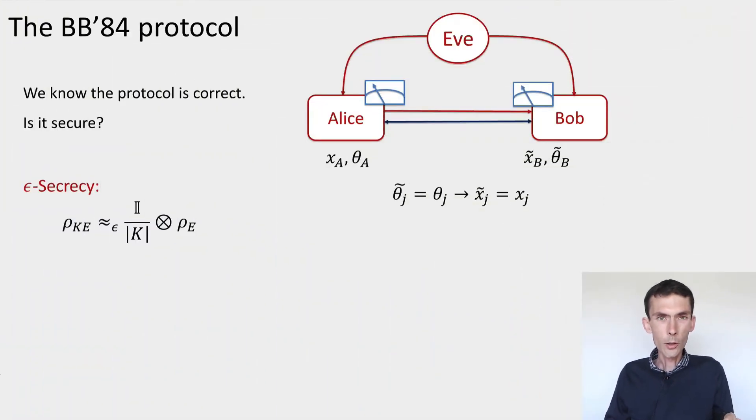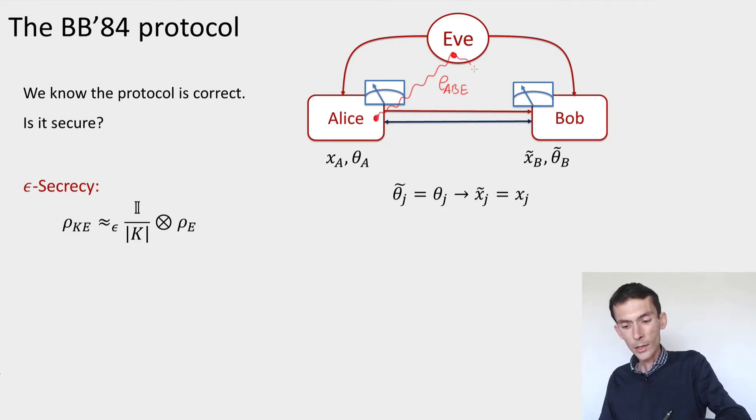Remember the purified form of the protocol, where in the first step, Eve got to prepare an arbitrary state ψ_ABE, of which she kept system E, distributed the n qubits that comprised system A to Alice, and the n qubits that comprised system B to Bob. In this way establishing some form of tripartite entanglement between Eve, Alice and Bob.